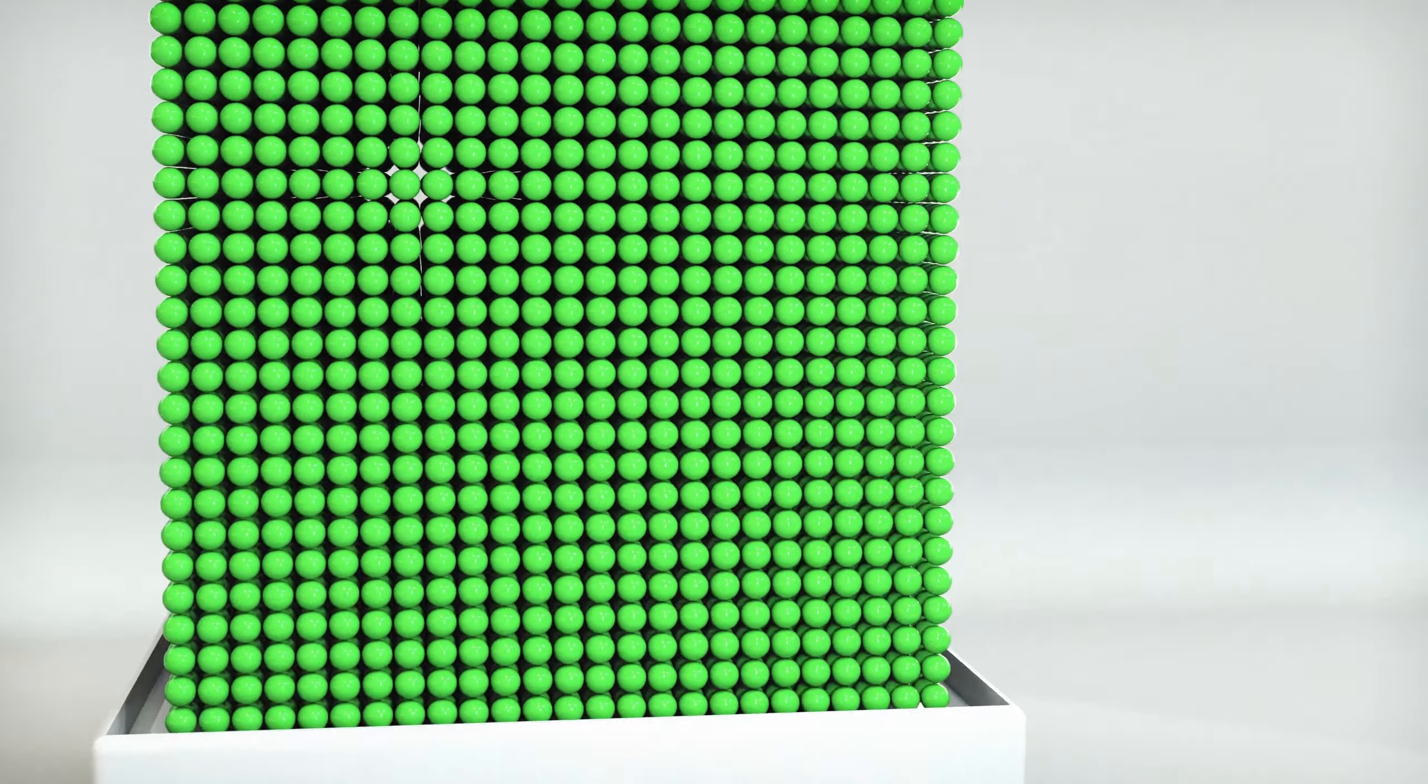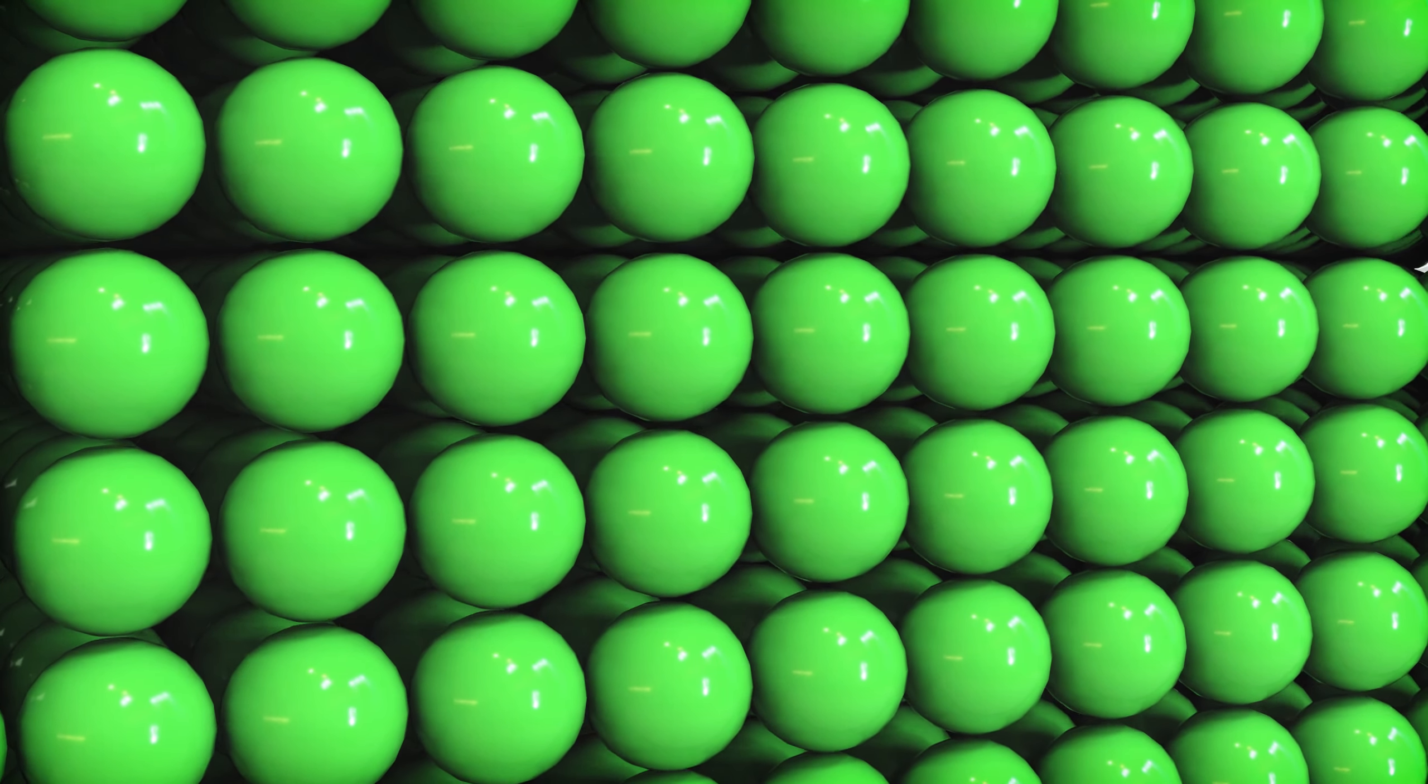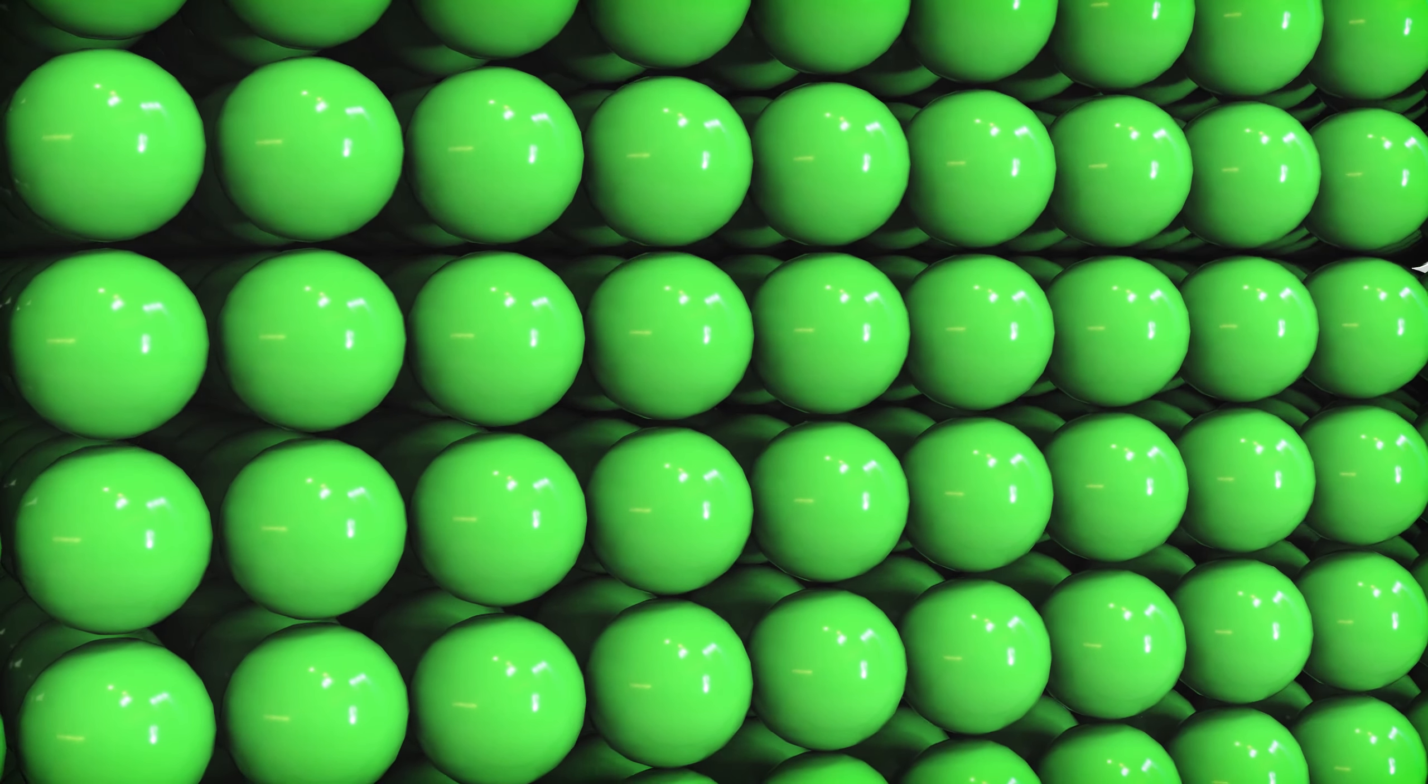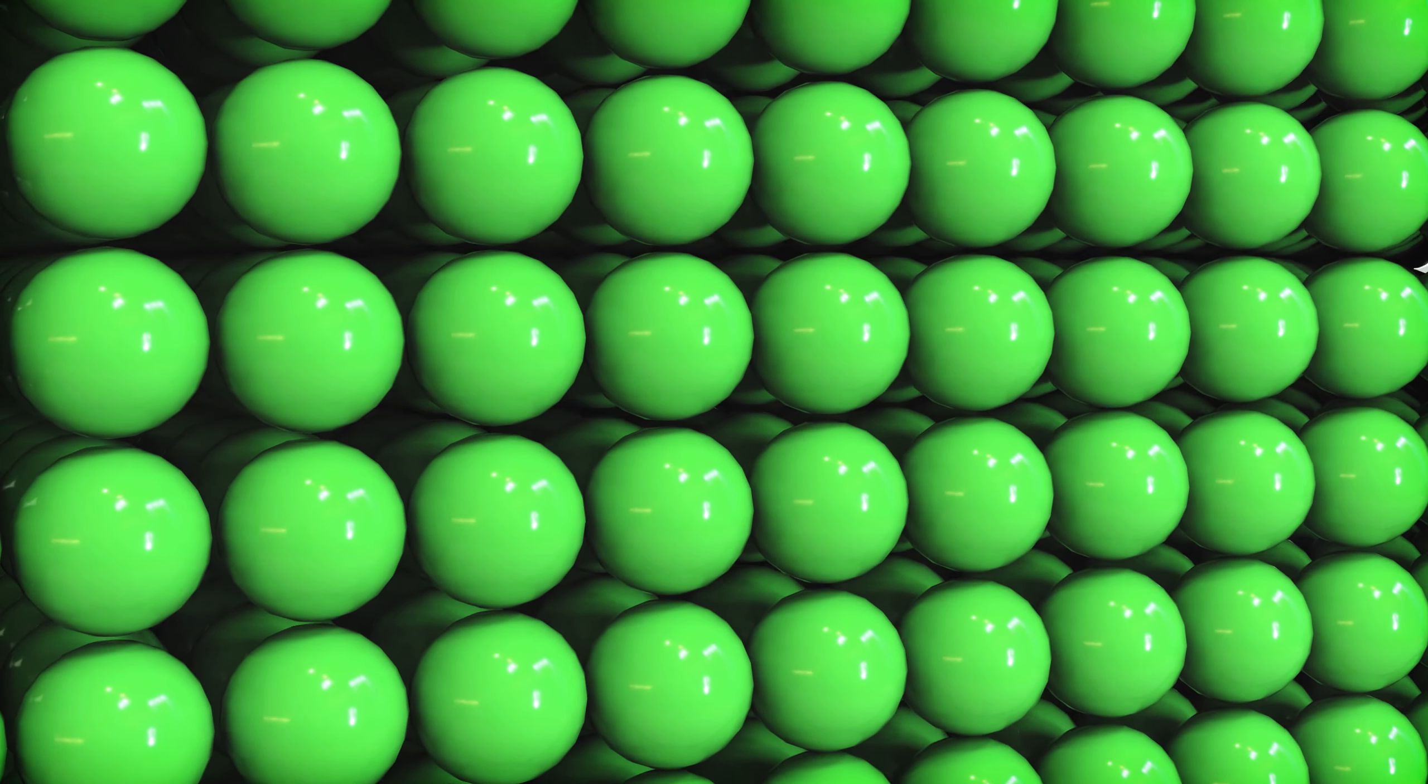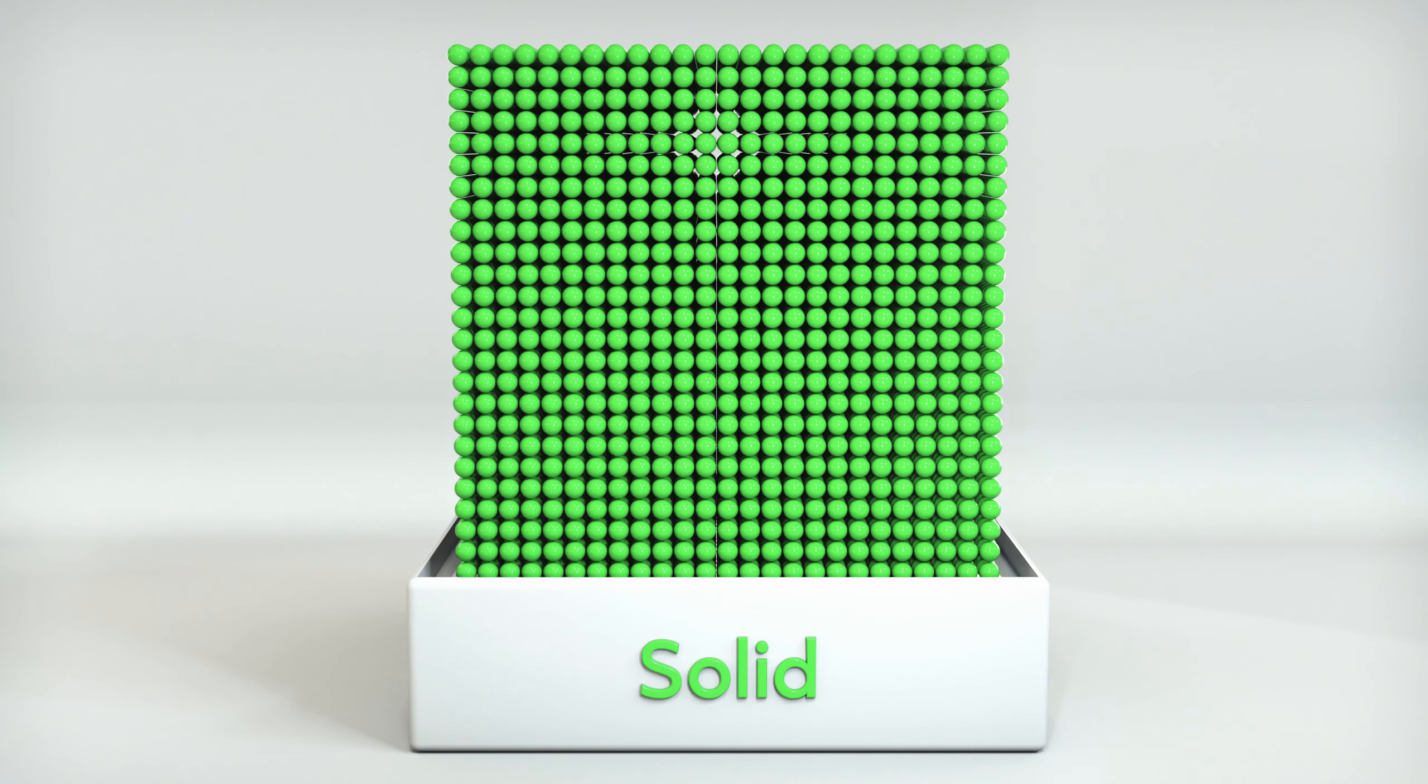Gas: Within a gas, particles have large gaps of space, and there's no specific pattern to their arrangements. The particles move very quickly and freely. Since there's a lot of space between particles, gas is compressible. Gas can easily flow since particles dart past each other, and gas takes the shape and volume of the container that it's in, since the particles move freely.